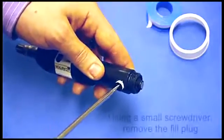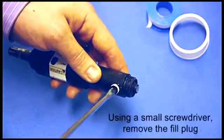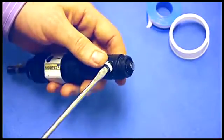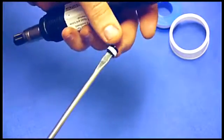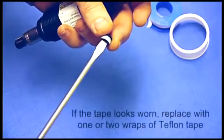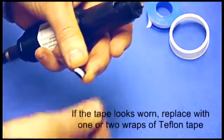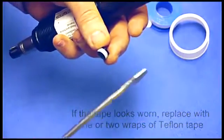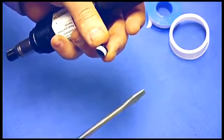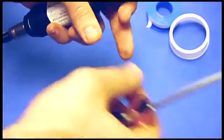Next you want to remove the fill plug and check to make sure there's an adequate amount of pipe tape still remaining on the fill plug. Here I see there's still a good amount so I don't need to replace it. If there's not enough, you want to first remove the excess pipe tape and then place about one to two wraps of pipe tape around the fill plug, no more than two.